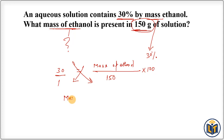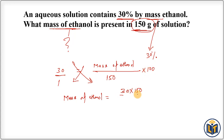Using cross-multiplication: mass of ethanol = (30 × 150) / 100. The zeros cancel, and multiplying gives us 45 grams. So the mass of ethanol (the solute) present in 150 grams of solution is 45 grams.